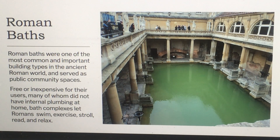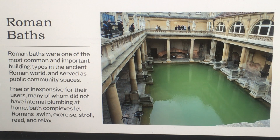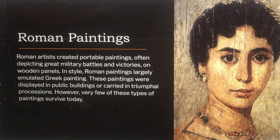Roman baths are one of the most common and important building types in the ancient Roman world, serving as public community spaces. Free or inexpensive for users — many of whom did not have internal plumbing at home — bath complexes let Romans swim, exercise, stroll, read, and relax.